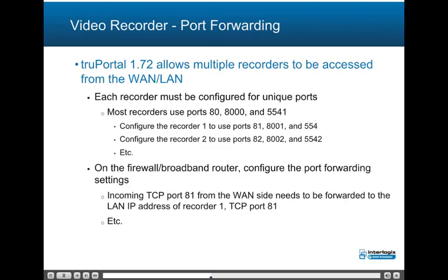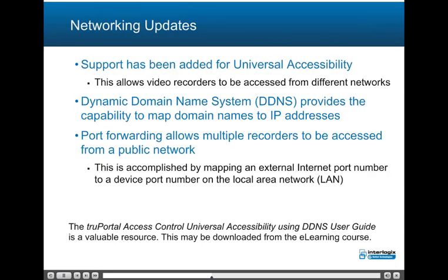Port Forwarding: TruePortal 1.72 allows multiple recorders to be accessed from one LAN; however, each recorder must be configured for unique ports. Support has been added for universal accessibility allowing video recorders to be accessed from different networks. Dynamic Domain Name System (DDNS) provides the capability to map domain names to IP addresses. Port Forwarding allows multiple recorders to be accessed from a public network by mapping an external internet port number to a device port number on the local area network (LAN).